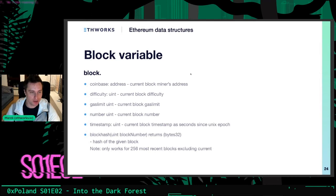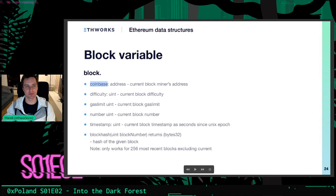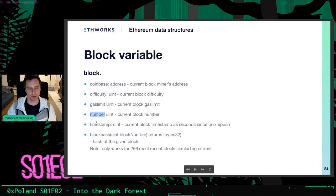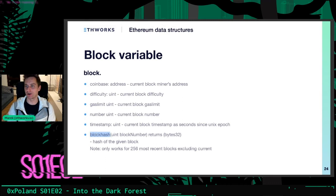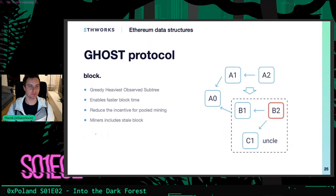There are ideas for more efficient data structures with similar properties, but those will likely come in the future. In Solidity, you can access block data using the built-in 'block' variable. It exposes fields including coinbase, difficulty, gas limit, block number, and timestamp. You can also query block hashes, but only for the current block's 256 most recent previous blocks — you cannot ask for hashes of older blocks. As homework: figure out why you cannot ask for the hash of the current block itself.